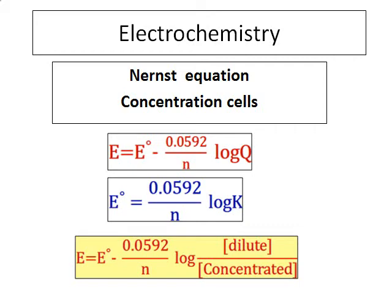We will continue with electrochemistry, and in this video I am going to focus on concentration cells. We are already familiar with the Nernst equation — the relation between E, E0, K, and concentration. For concentration cells we will be using the equation: E equals E0 minus 0.0592 divided by N, log of the dilute concentration in the numerator and the concentrated concentration in the denominator.